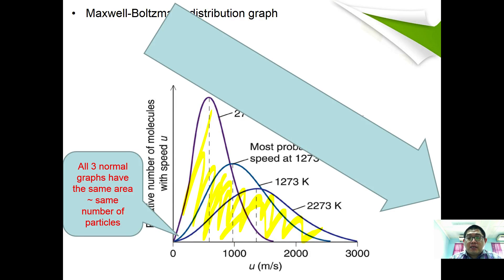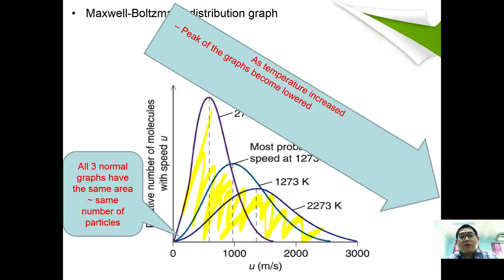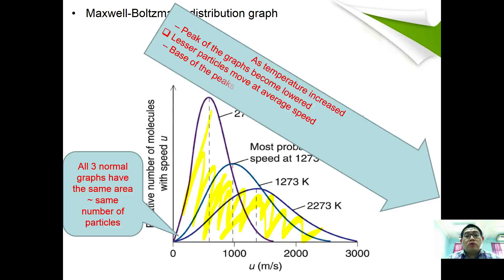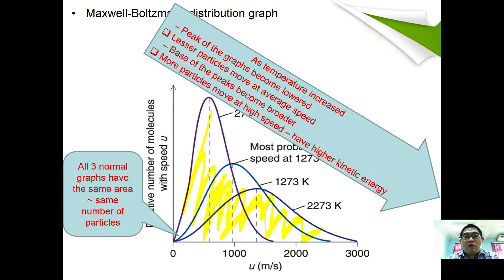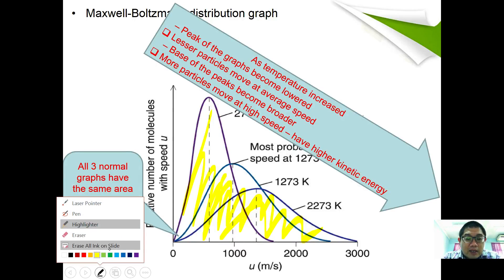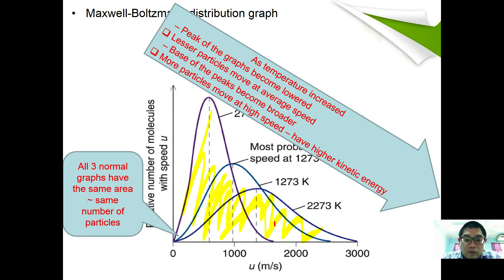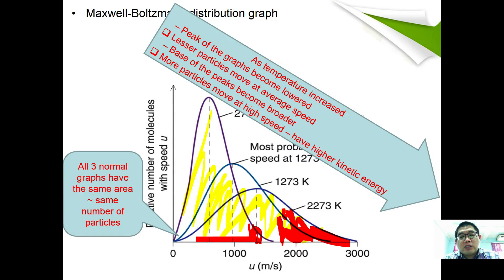As temperature increases, the following changes take place. First, the peak of the graph becomes lower, indicating that fewer particles move at average speeds while more molecules travel at high speeds. The graph also becomes broader, indicating more particles move at higher speeds with higher kinetic energy. There are more particles in the high kinetic energy region due to the higher temperature.